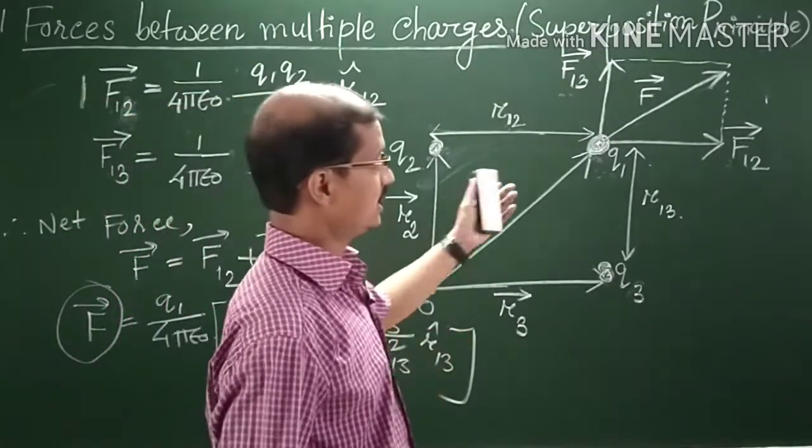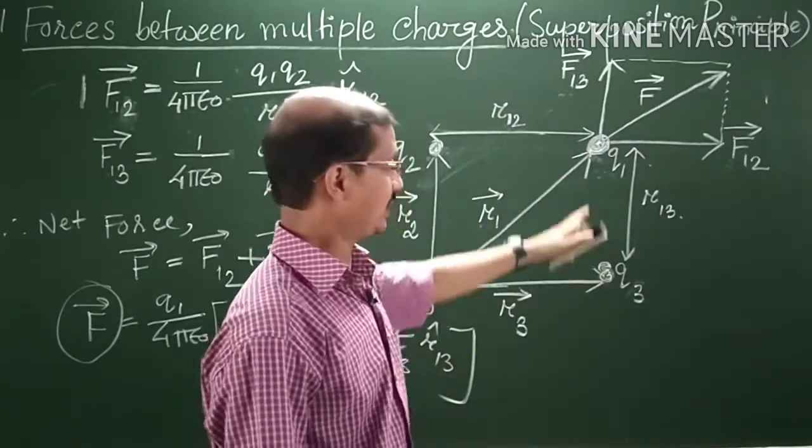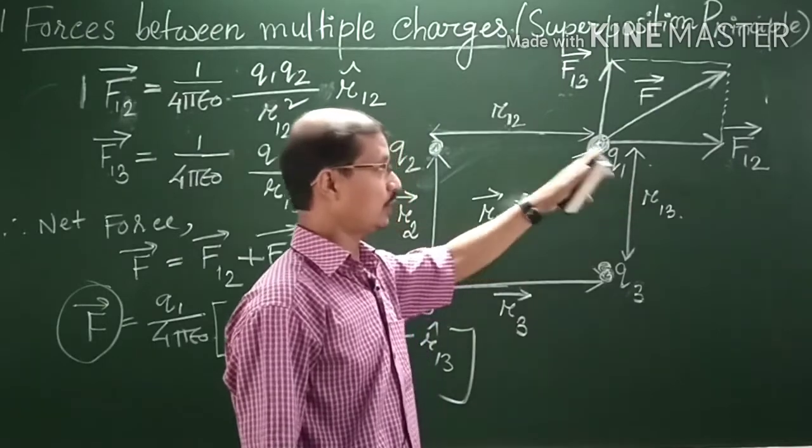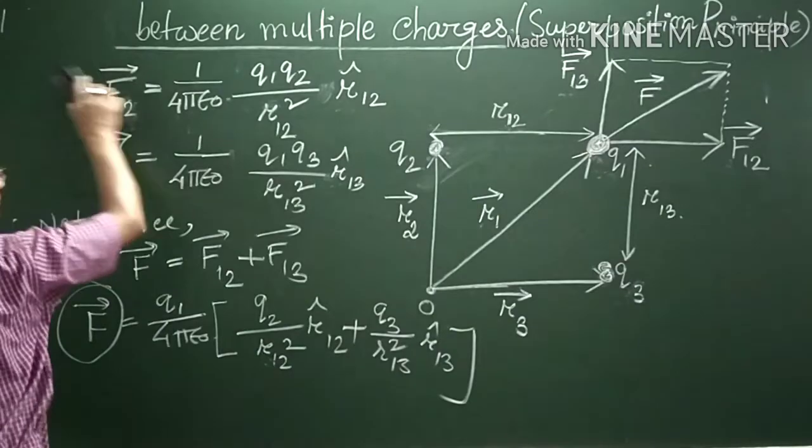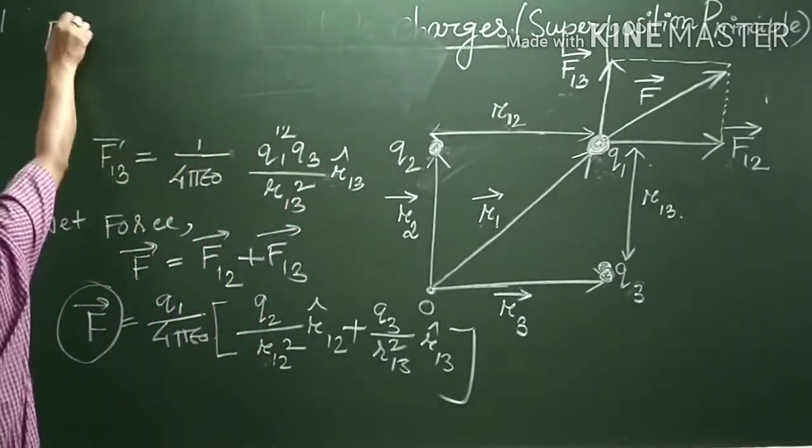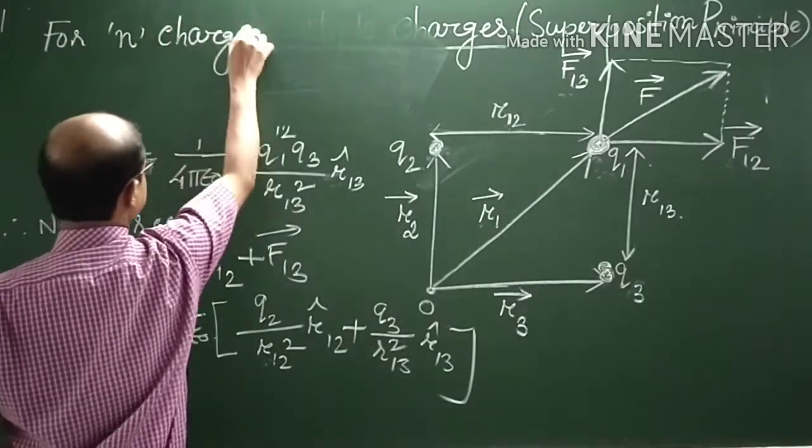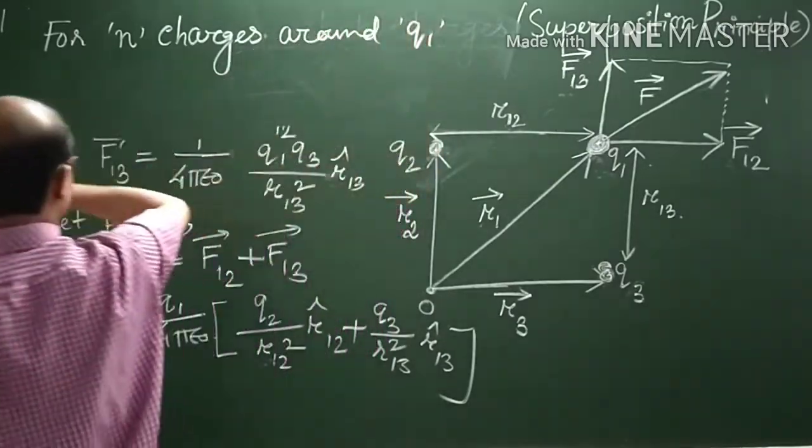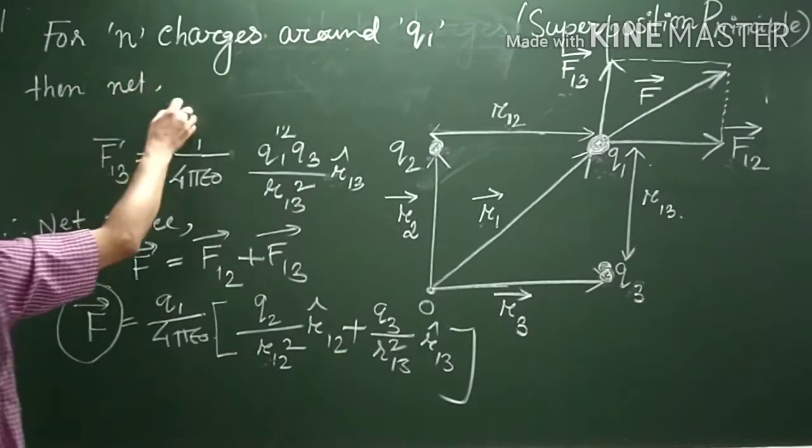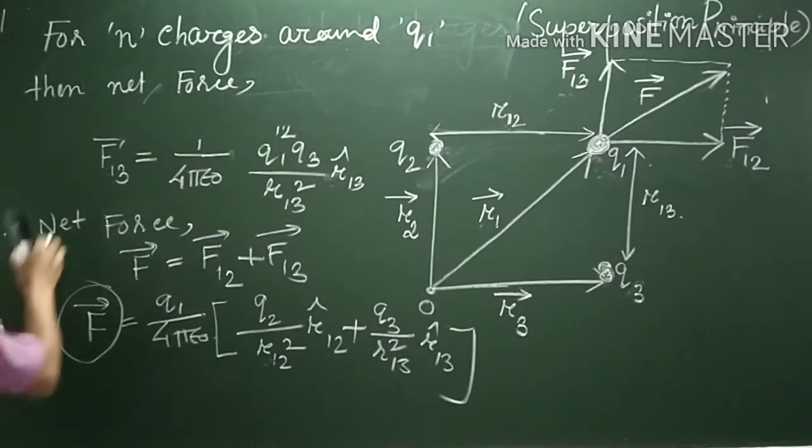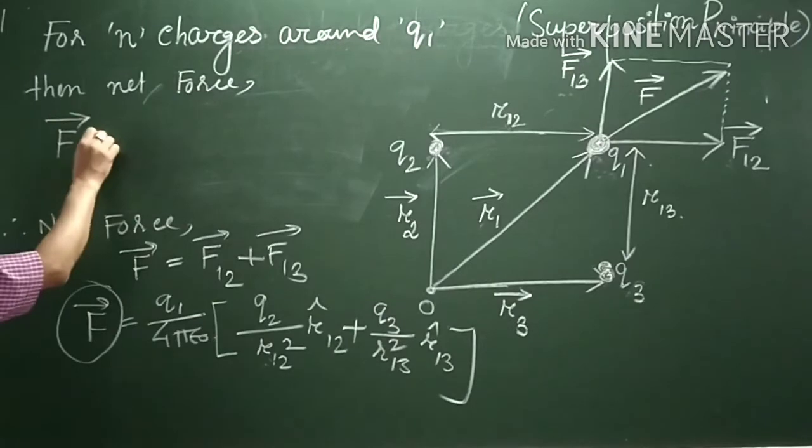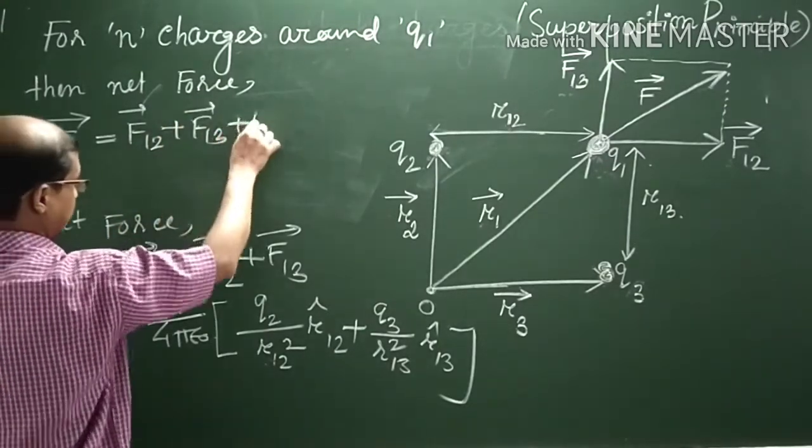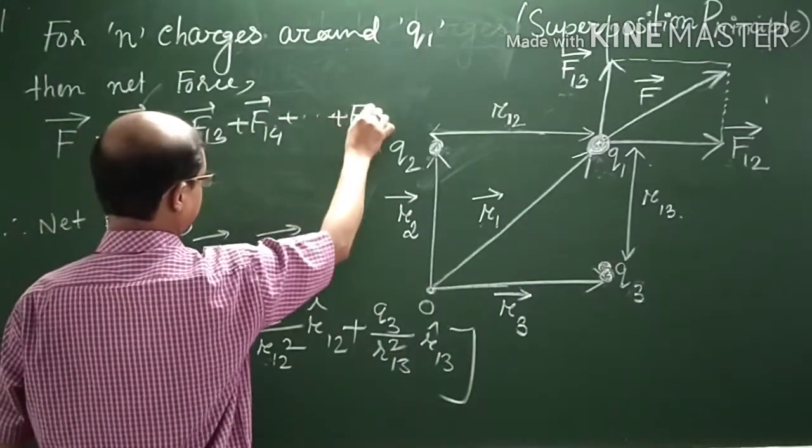Now if we consider that around Q1 we have N number of charges, if we imagine there are N number of charges around Q1, then what will be the total force on Q1? For N charges around Q1, the net force is F12 plus F13 plus F14 and so on up to F1N.